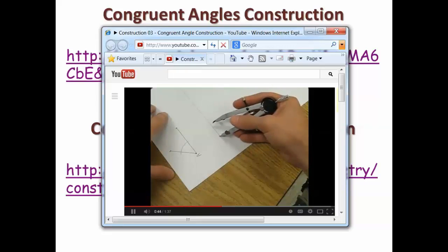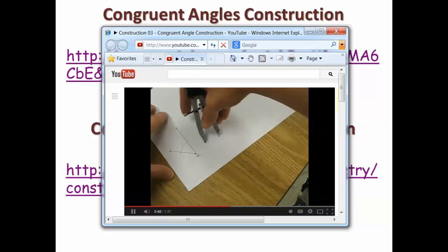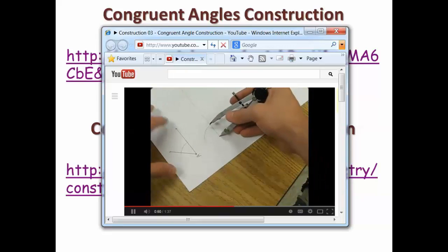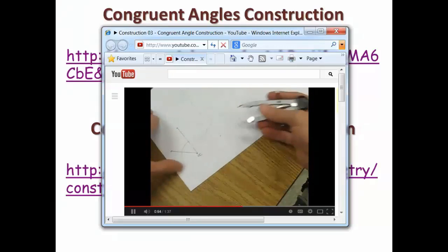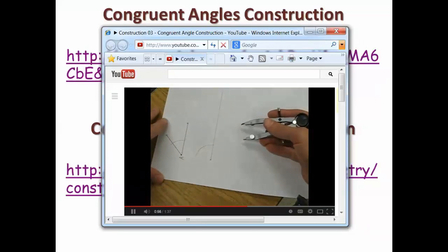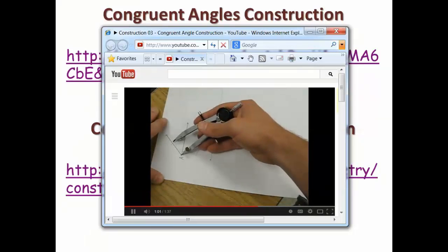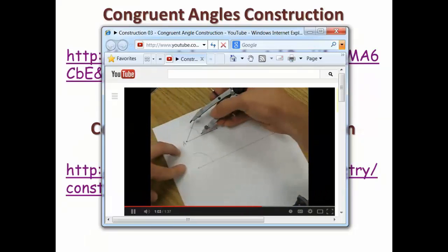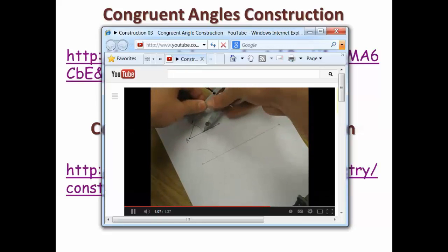We don't have to make a full circle, just enough so that it's as wide as the angle we are going to copy. The final step would be to measure the arc length with our compass. We need to make this a little smaller so that it matches the arc length between the sides of the angle.